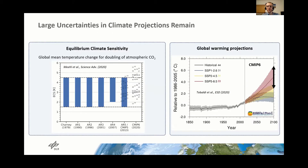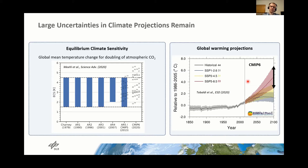I'm going to start with a brief motivation. On the left-hand side, you can see the equilibrium climate sensitivity assessed in different assessment reports, marked as blue bars, and also from different climate models. You can see that since the Charney report in 1979, the assessed range of ECS has not decreased from 1.5 Kelvin to 4.5 Kelvin. The CMIP6 models show a higher range in ECS, and on the right-hand side, you see global warming projections for CMIP6 models showing a large range in uncertainty. This motivates my talk.